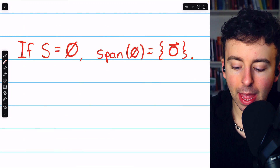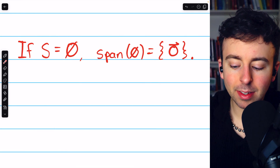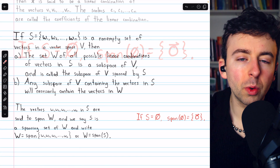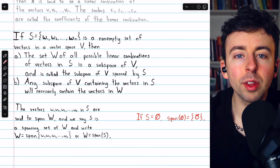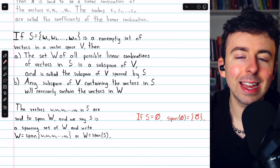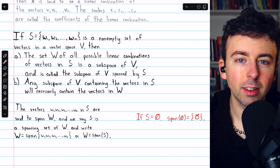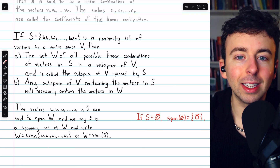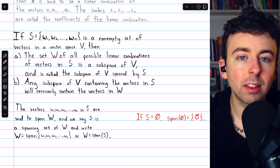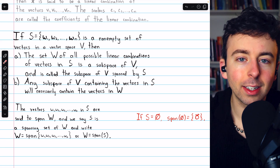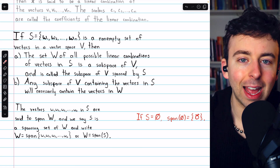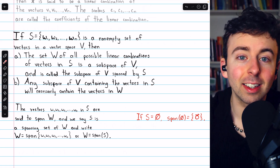We define the span of the empty set to be the zero vector space. When we think about span, we're thinking about taking all linear combinations. What vector space does a set S span? It spans the vector space created by taking all linear combinations of S. Let's see an example.